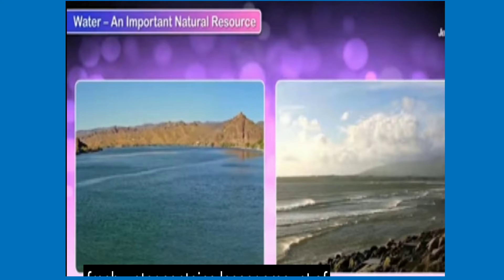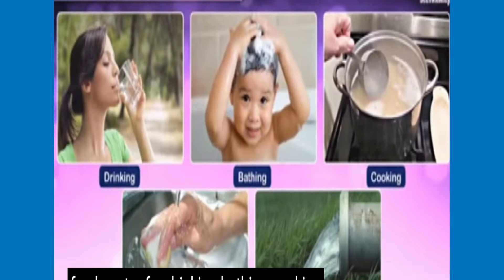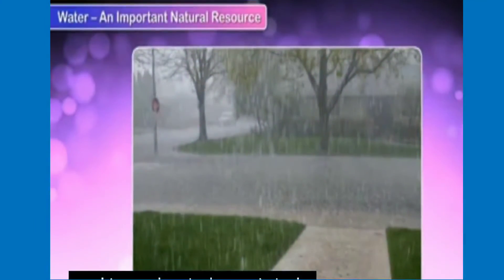Fresh water contains a lesser amount of dissolved salt than sea water. We use fresh water for drinking, potting, cooking, washing, and agriculture. Rain is the chief source of fresh water on earth. India gets most of its rain during monsoons, between June and September — that is for about 4 months only. Rainfall is not uniform throughout the year; some places get very heavy rainfall while other places get scanty rainfall.